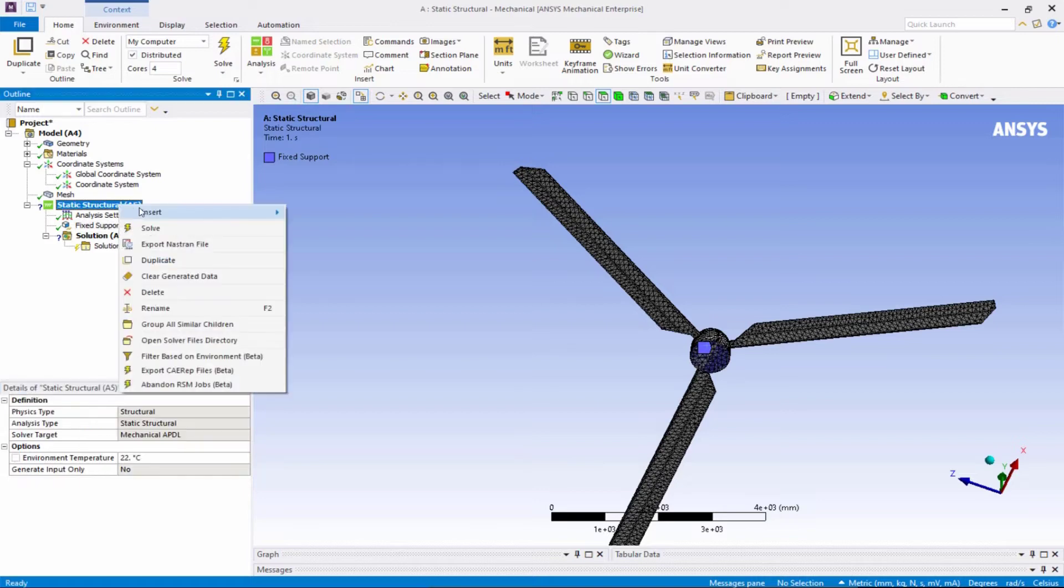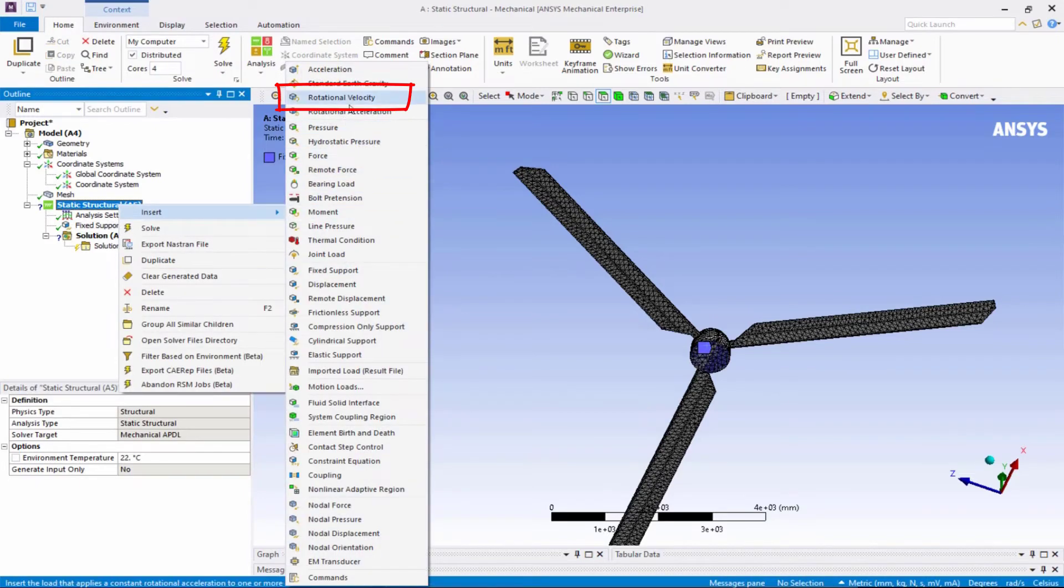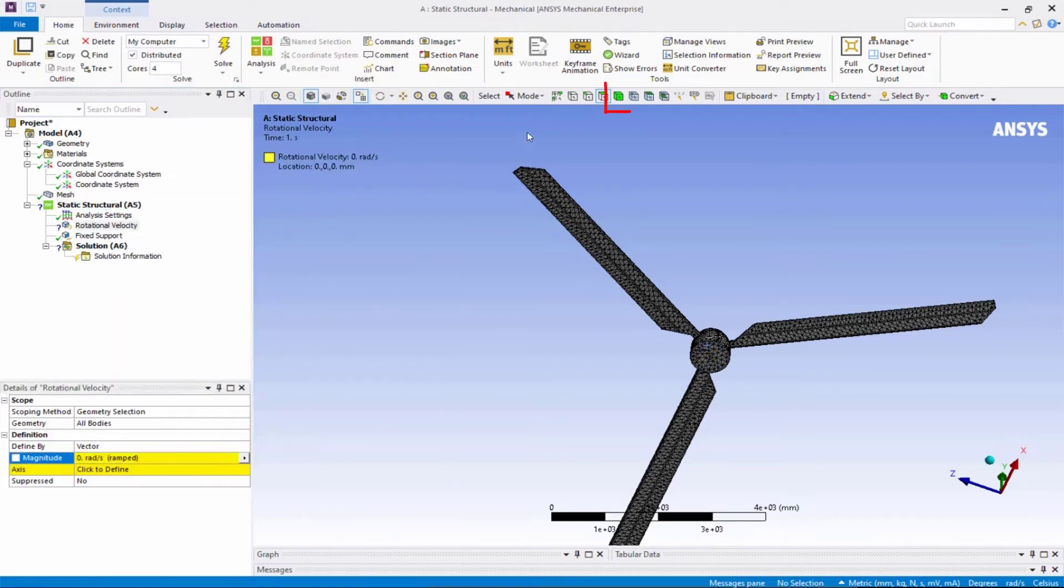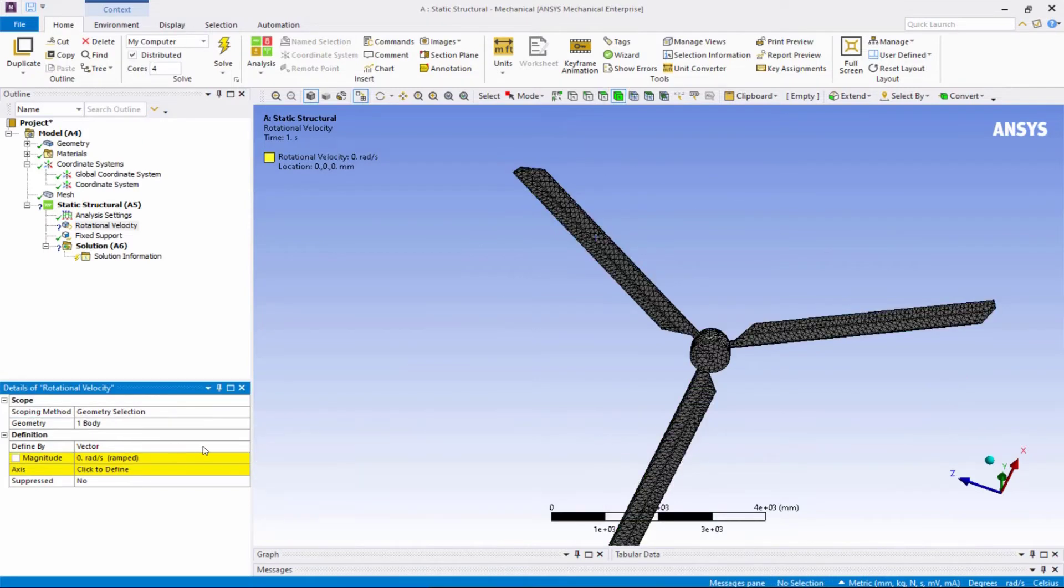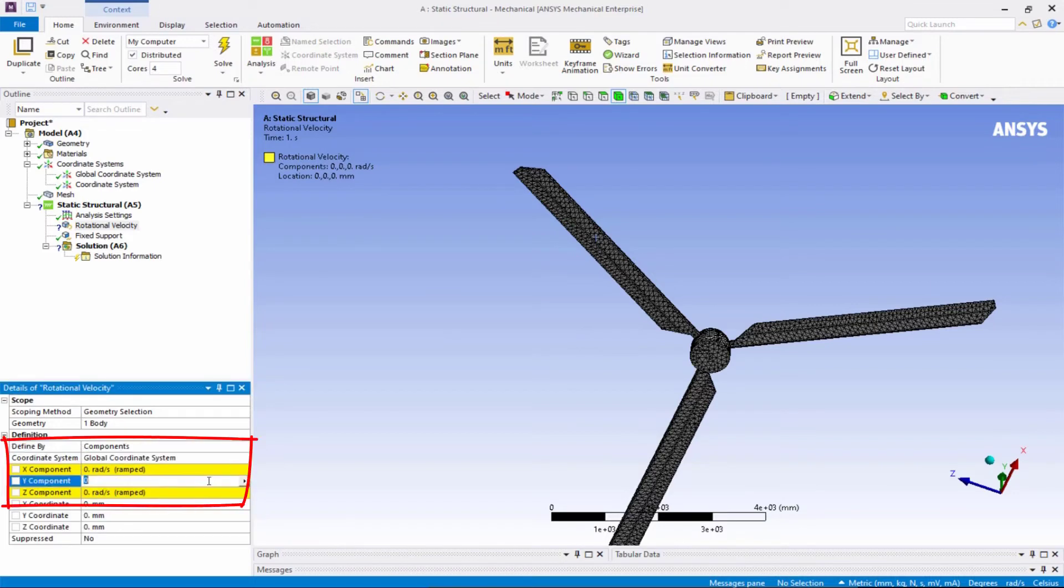Right-click on Static Structural again and insert the inertial load of rotational velocity. Now pick the body selection filter. Select all geometry and click Apply. Then set the Define By to Components and set 1.5 radians per second for the Y component.